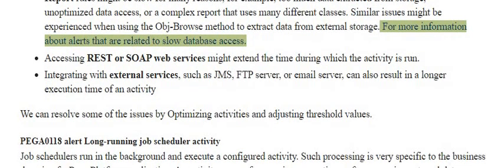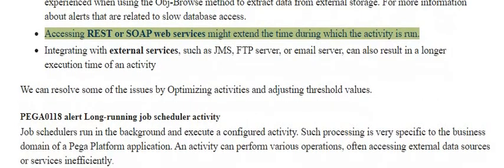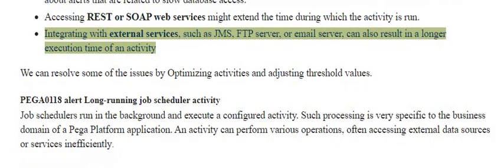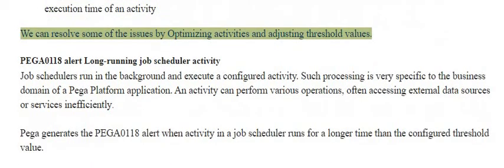For more information about alerts related to slow database access: accessing REST or SOAP web services might extend the time during which the activity is run. Integrating with external services such as JMS, FTP server, or email server can also result in a longer execution time of an activity. We can resolve some of these issues by optimizing activities and adjusting threshold values.